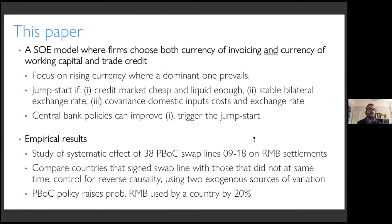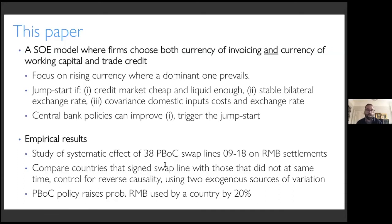The contribution is these thresholds. We're not going after the question of whether the RMB will become a dominant currency — we're at the other extreme: why does a currency go from zero use to being positively used by firms outside its borders in dealings not with the issuing country itself? The second part of the paper uses the PBOC swap lines signed with 38 countries. The PBOC didn't sign all 38 on the same date — South Africa's was signed in 2015, Nigeria's in 2018. We exploit the variation across countries and time of when each country got an RMB swap line to test whether this policy contributed to RMB usage.